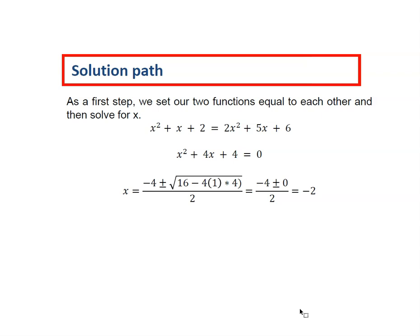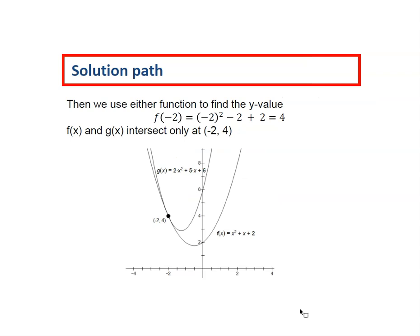As a first step, we'll set our two functions equal to each other and solve for x. When we do, we find that x equals negative 2 is the single solution. Then we use either function to find the corresponding y value, in this case 4. When we look at the graphs of f of x and g of x, we see they intersect only at negative 2, 4.